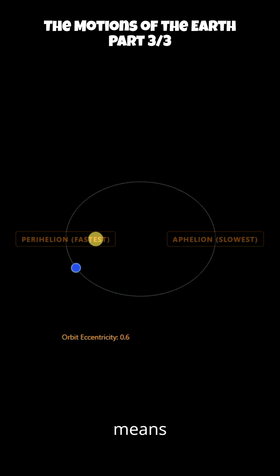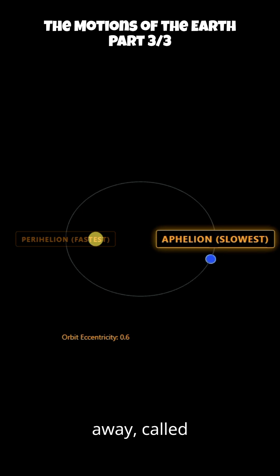This means sometimes Earth is closer to the sun, called perihelion, and sometimes it is farther away, called aphelion.